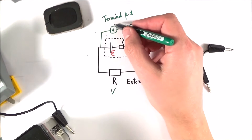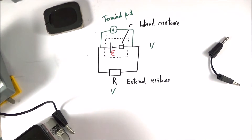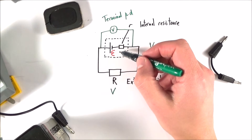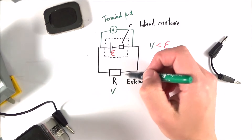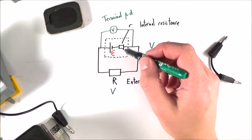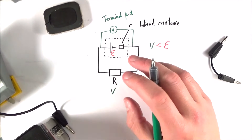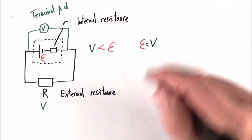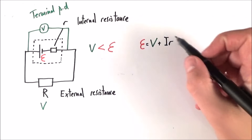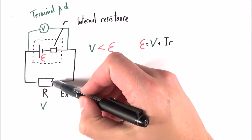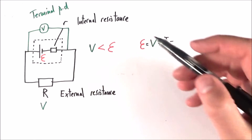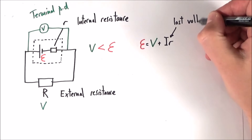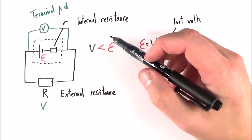The terminal PD, V, is always going to be smaller than the actual source of EMF. Every time we have a current flowing and an internal resistance, some of the energy available to the circuit is used up by the charge carriers moving through that battery. We can write that the EMF is equal to the terminal potential difference plus I times r. Think about Kirchhoff's second law — the PD across this plus the PD across that equals the EMF. This part — I times r — is what we call the lost volts, lost within the internal supply of that power source.